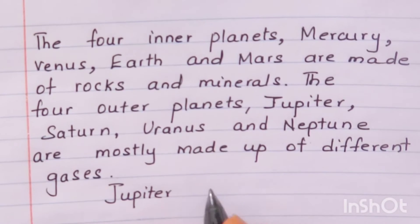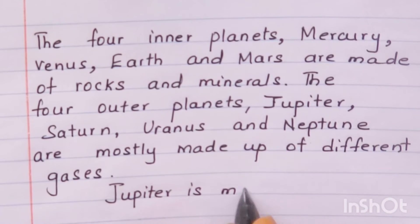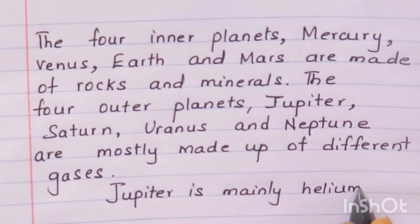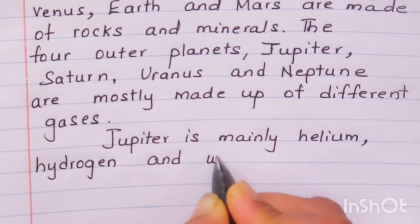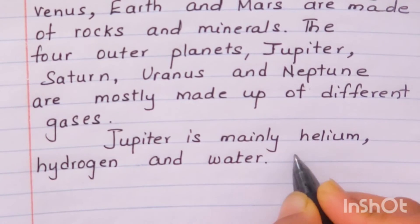Planets like Jupiter, Saturn, Uranus, Neptune are made up of different gases, mostly hydrogen and helium.